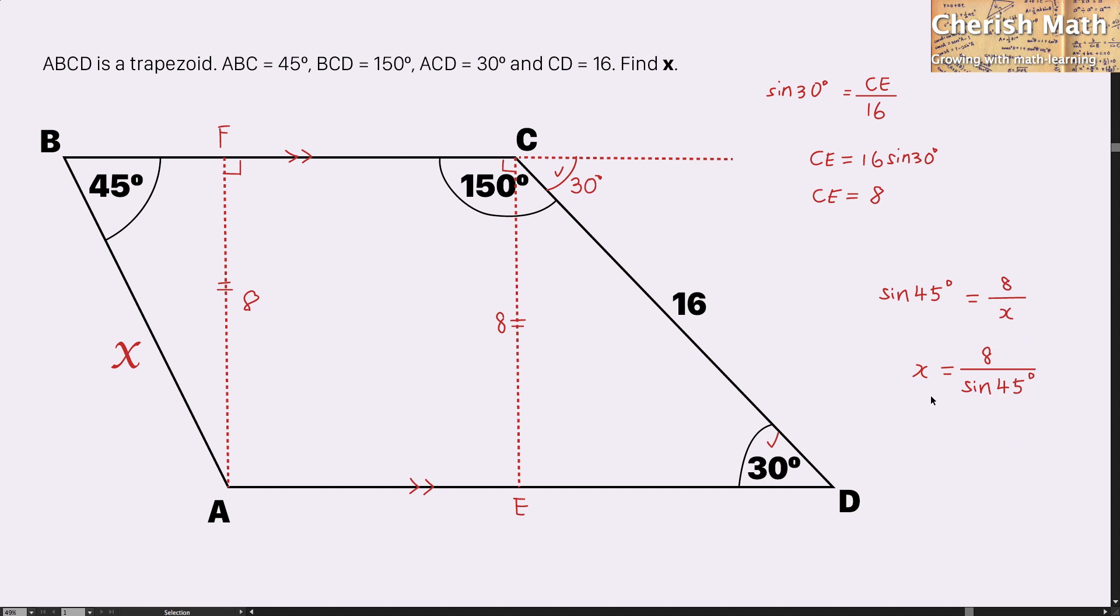The value of X is 8 over sine 45. I'm going to substitute the value of sine 45 degrees, which is 1 over the square root of 2. So X equals 8 times square root of 2.